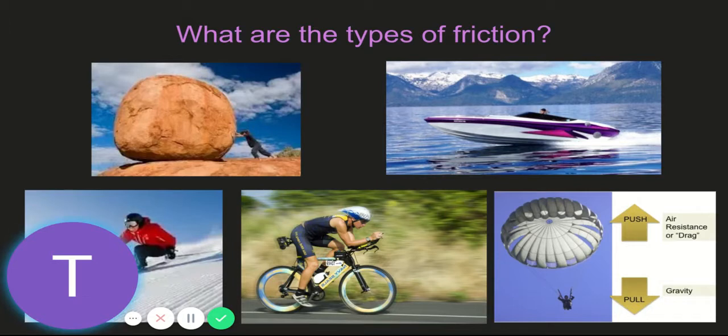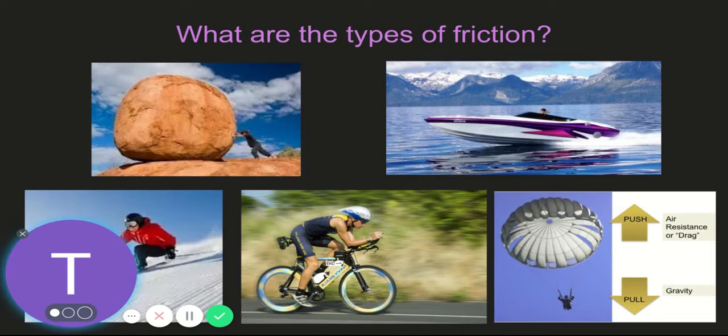What are the different types of friction? When we look at different types of friction, we've got friction that is related to static friction. Static friction is when the objects are not moving, like we see up here on the top left.